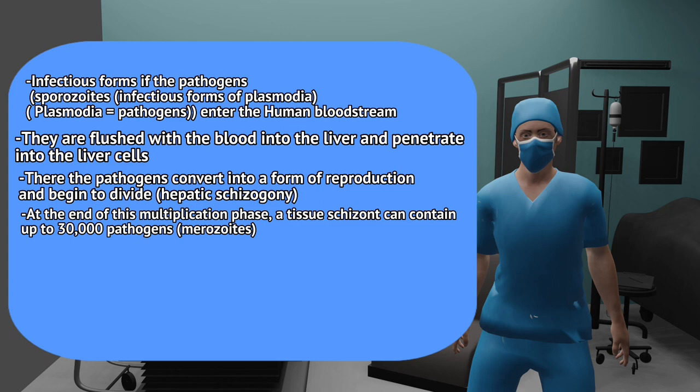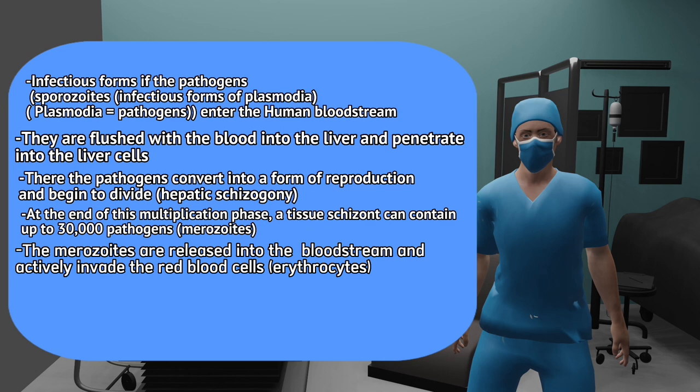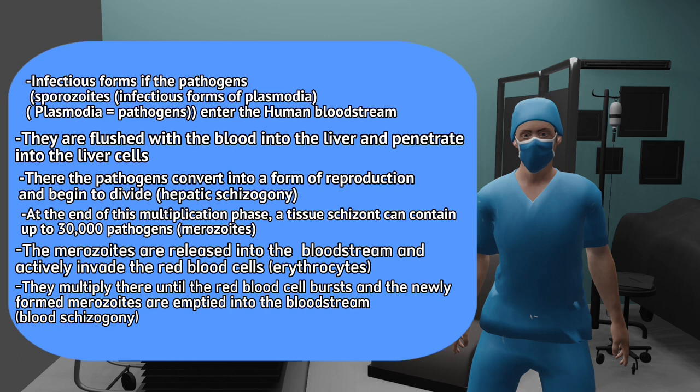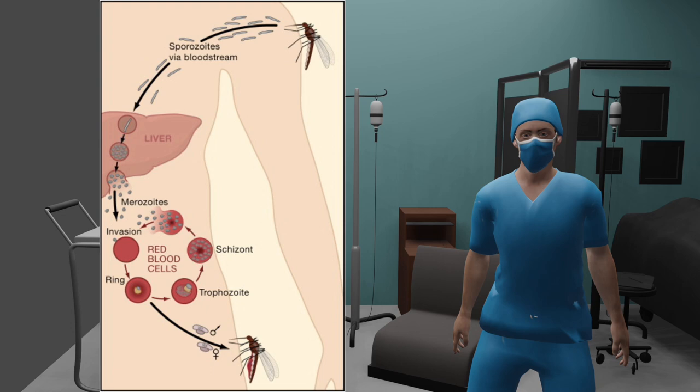The merozoites are released into the bloodstream and actively invade the red blood cells — erythrocytes. They multiply there until the red blood cell bursts and the newly formed merozoites are released into the bloodstream — blood schizogony. These now attack new blood cells. Here you can see the steps in a picture.